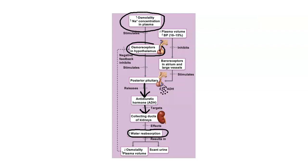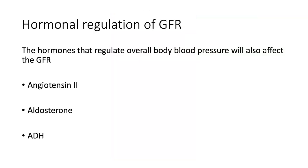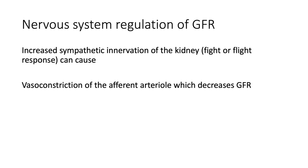That's a quick review of how angiotensin 2, aldosterone, and ADH affect overall blood pressure — and of course they also affect the glomerular filtration rate. Those are the two main ways GFR is regulated: autoregulation and hormonal regulation. There's also intervention by the nervous system. The nephrons do have sympathetic innervation, and if there's a fight-or-flight response or a sudden drop in blood pressure, increased sympathetic innervation causes vasoconstriction of the afferent arteriole, putting the kidneys on standby and decreasing the GFR.